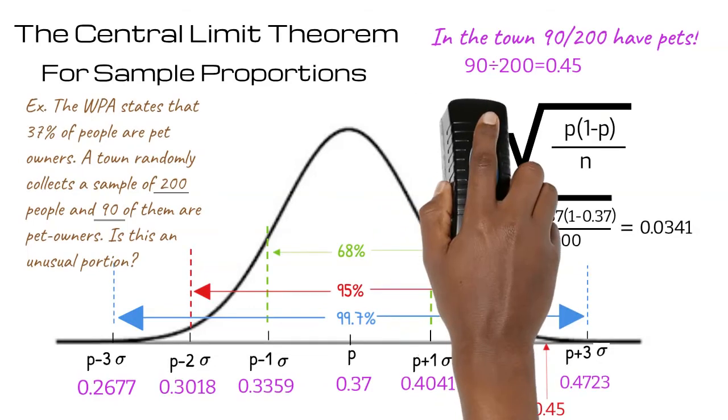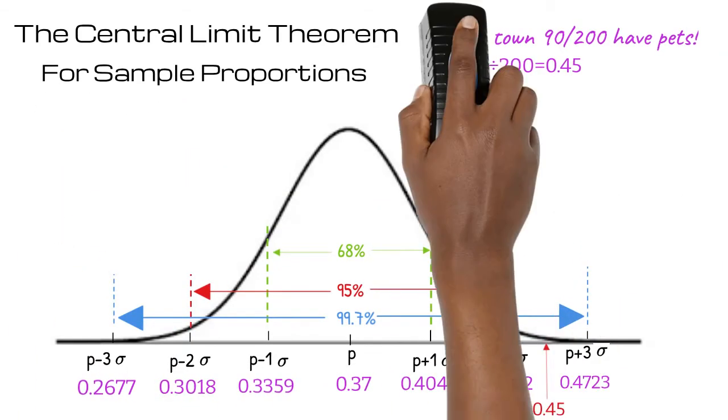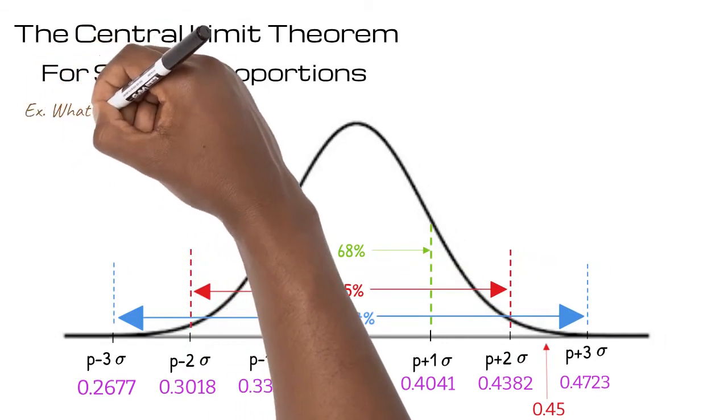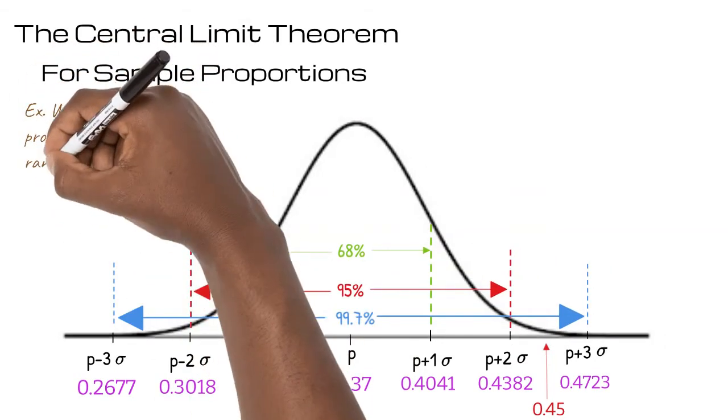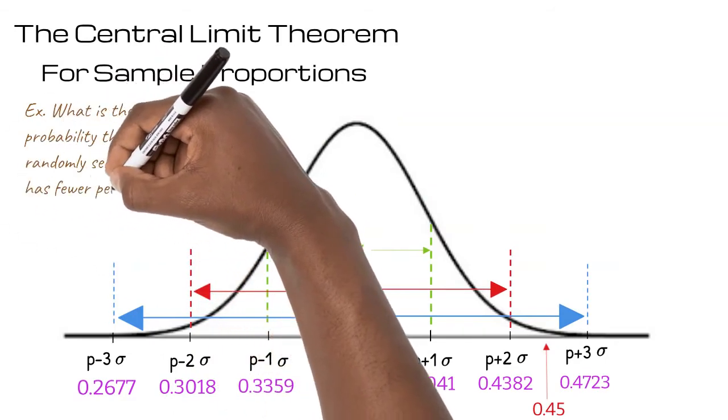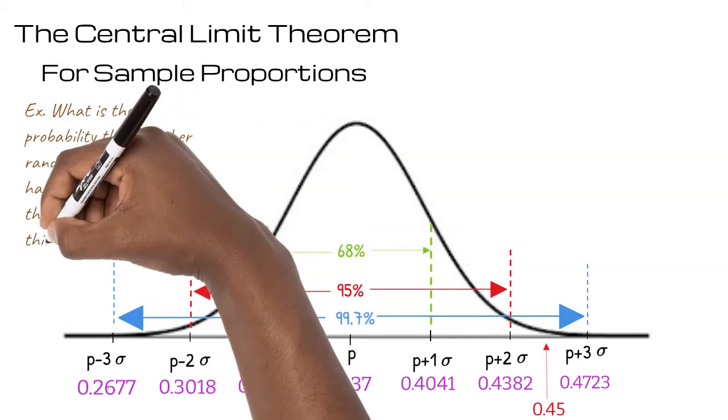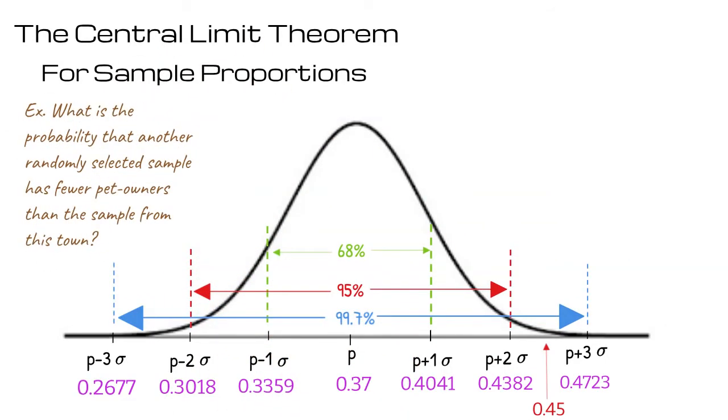Let's look at an example that will allow us to get more specific. What is the probability that another randomly selected sample has fewer pet owners than the sample from our previously discussed town? 50% of proportions are on the left side of our line of symmetry.